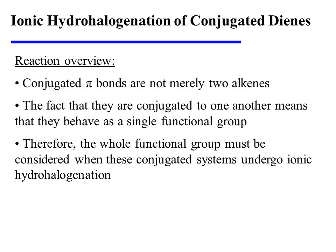When the substrate is a conjugated diene rather than a simple alkene, the reaction is a bit different, because conjugated pi bonds are not merely two alkenes.